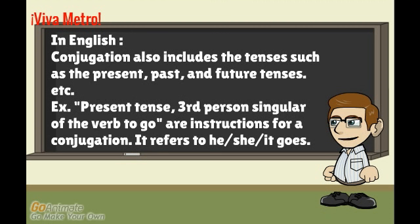Conjugation also includes the tenses, such as the present, past, and future tenses, among others. Let's see an example. The present tense, third person, singular of the verb 'to go' are instructions for a conjugation. It refers to he, she, it — goes.